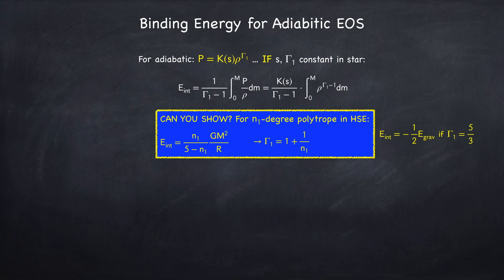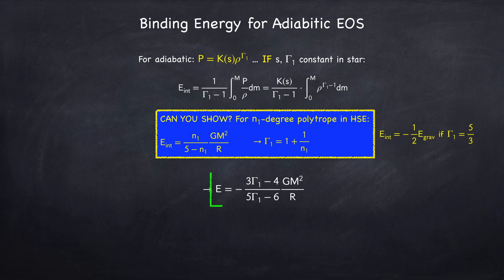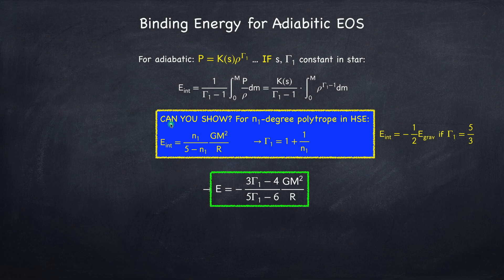So now we get that for a general adiabatic process, the total energy will be proportional to gamma 1 minus 4 thirds. Now we already found this in stellar physics 3e, so we're just confirming our result here. In order to get this, I just added the internal energy to the gravitational energy, which had a similar form, it's just that we had a 3 here instead of n1. And then I substituted n1 with gamma 1 using this relationship.